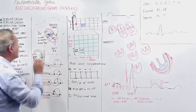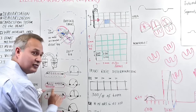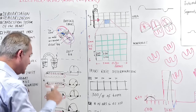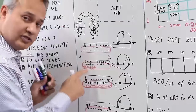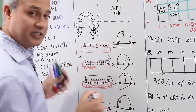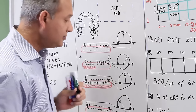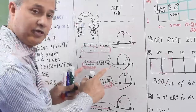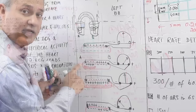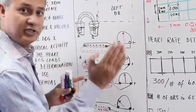When the SA node fires and the action potential spreads from point A toward point B, the wave of depolarization causes sodium to rush in, making those cells depolarized. Now, the probe at point A sits on depolarized cells while probe at point B still sits on polarized cells. The positive end is on positive and negative is different, so the voltmeter shows a positive deflection. As the paper moves under the ink-tipped needle, a positive wave forms on the paper.